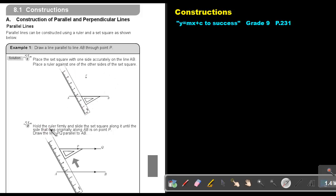Then, hold the ruler firmly and slide the set square along it until the side that was originally along AB is on point B. So basically, we just move this up until it's there.